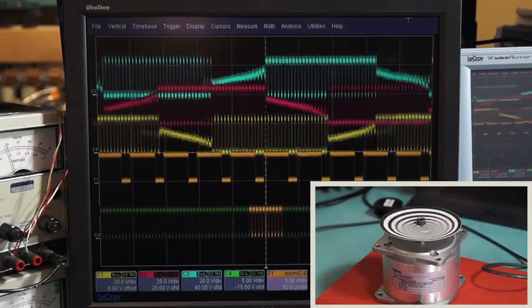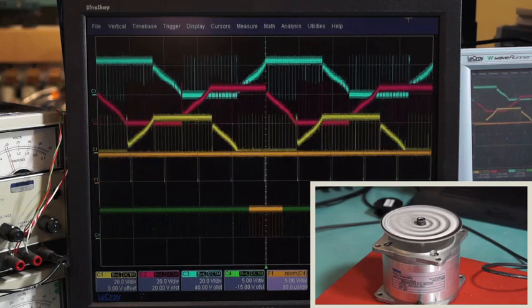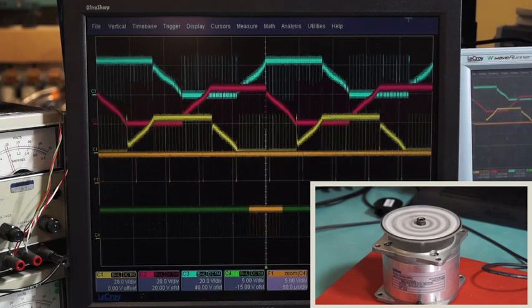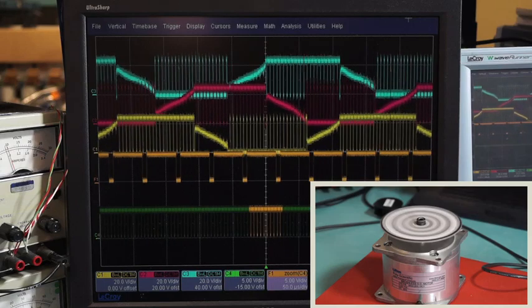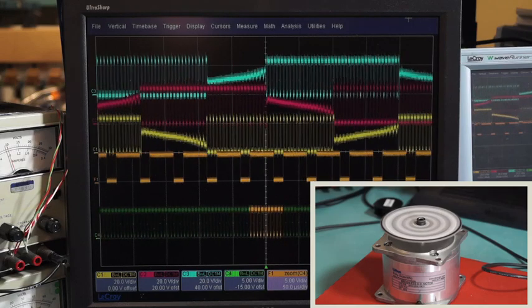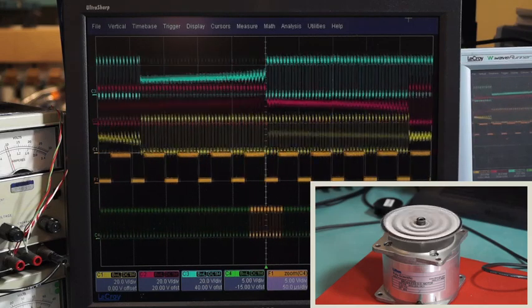As you can see, a duty cycle above 50% spins the motor in one direction. And then, returning to 50%, the speed returns to zero. When the duty cycle is reduced below 50%, the direction has switched.